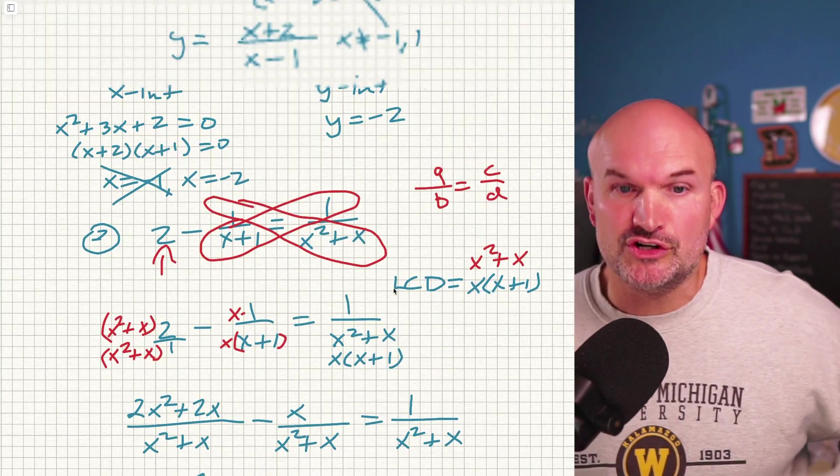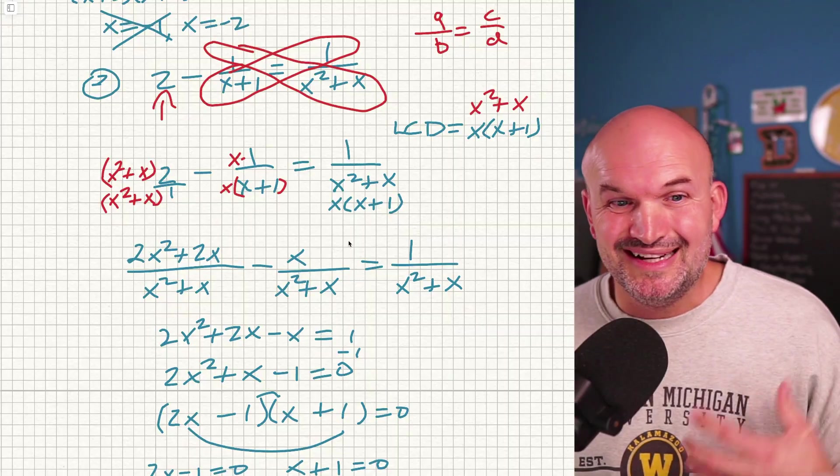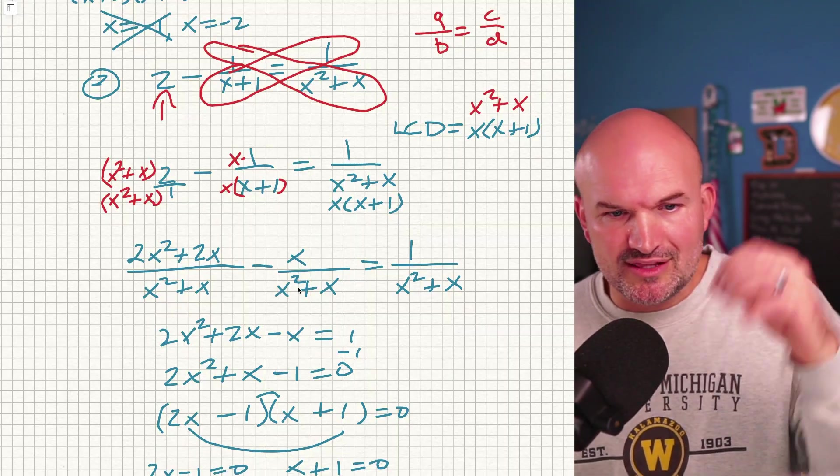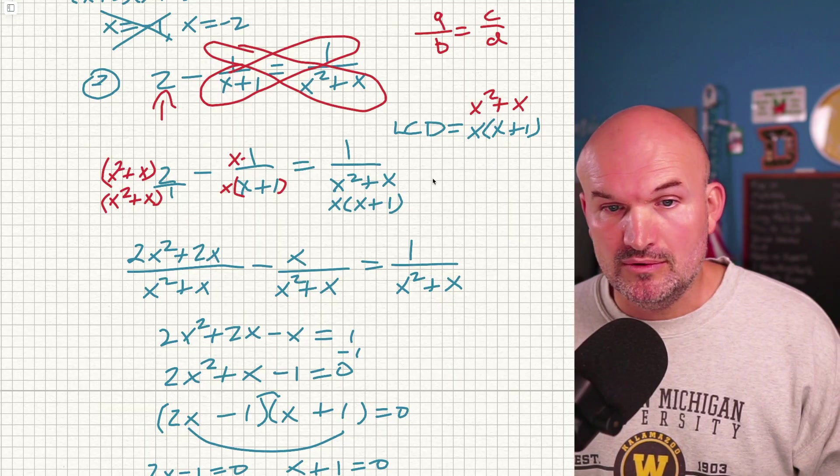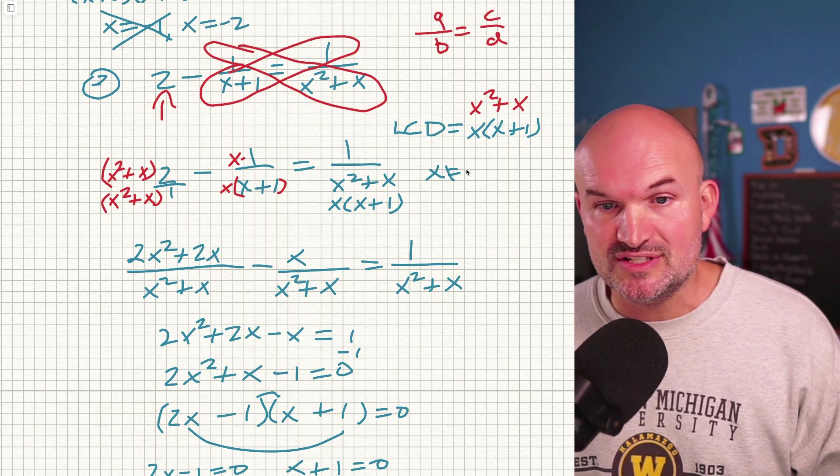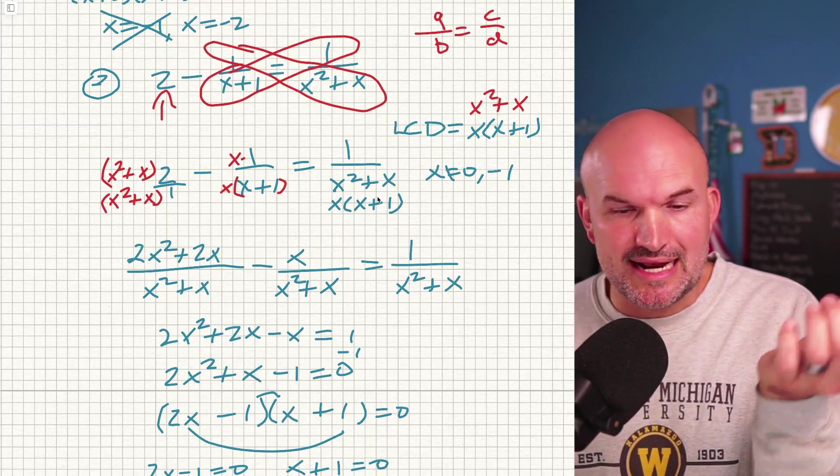However, remember when I talked about the restrictions in that first video about making sure, following through? That's really important, because what are the values that make my denominator 0 here? It's going to be 0, so X cannot equal 0, as well as when X equals negative 1, because those make our denominator equal to 0.